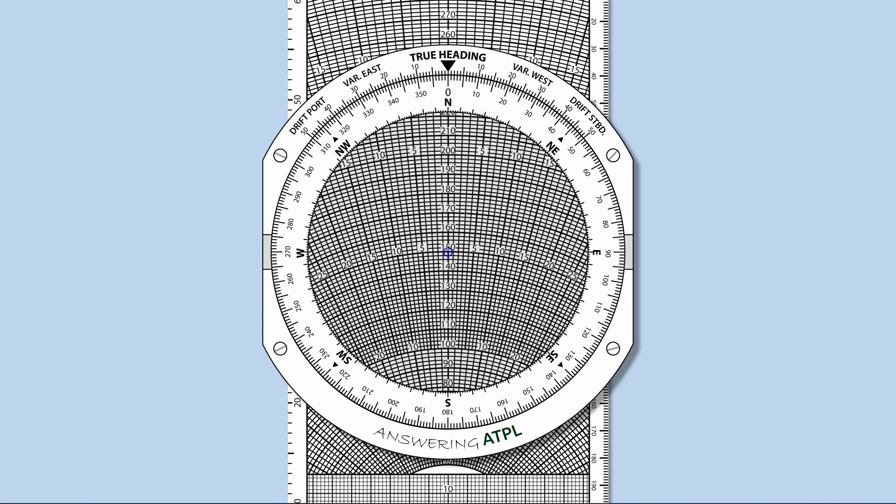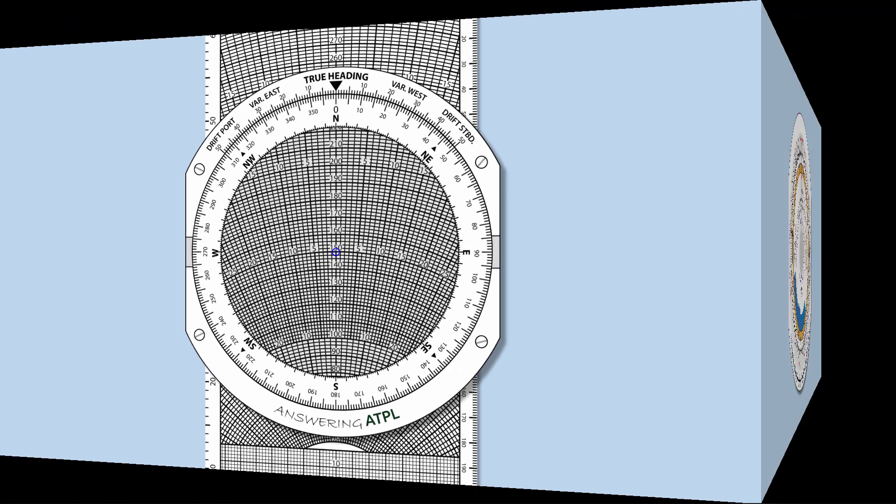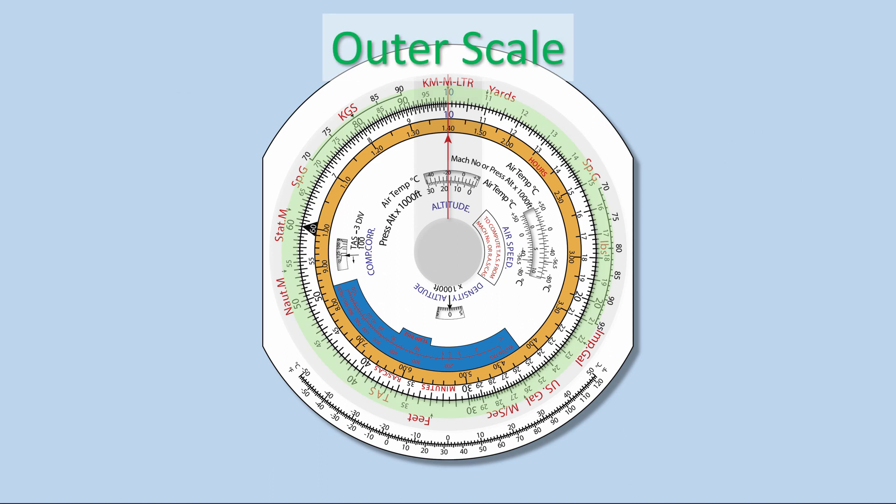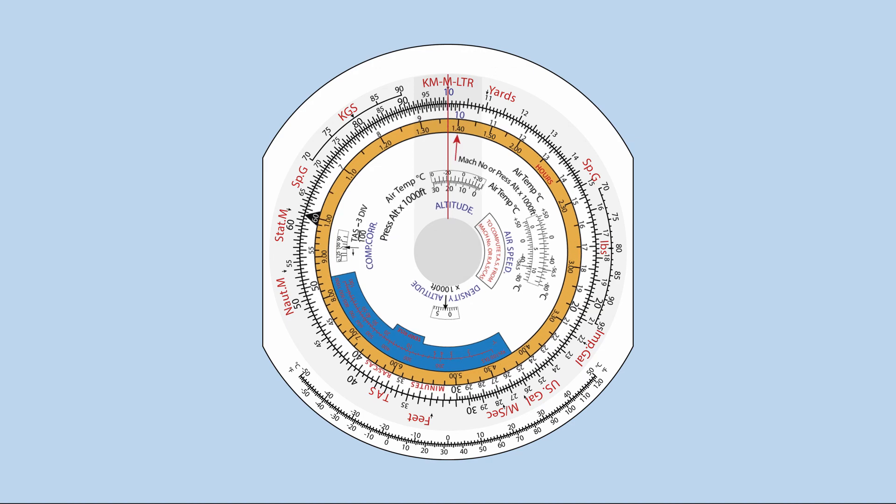In this video series, I will only concentrate on the computer side of the flight computer. The computer side has outer scale and inner scale. The outer scale is fixed. However, the inner scale is free to rotate.